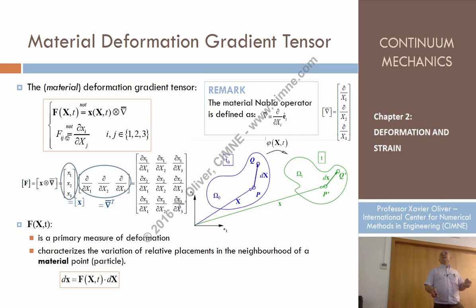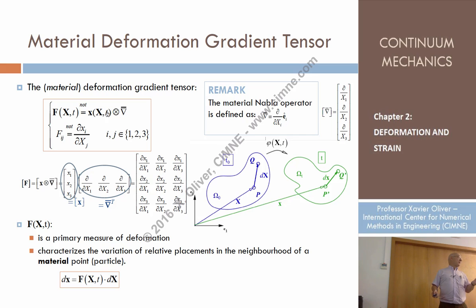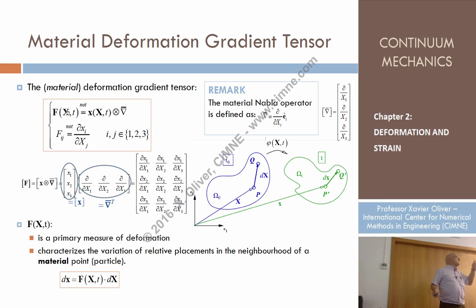We can say that this is the initial definition of the deformation gradient tensor — the material deformation gradient tensor — and its compact intrinsic description is the transposed material gradient of the equations of motion. Gradient would give one ordering; we need the transposed. We can call it the transposed material gradient of the equations of motion.